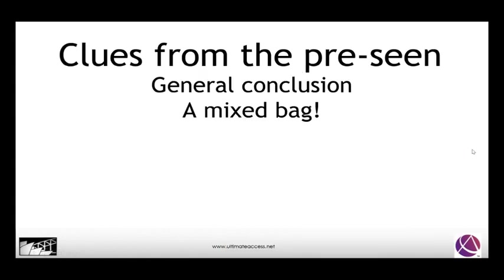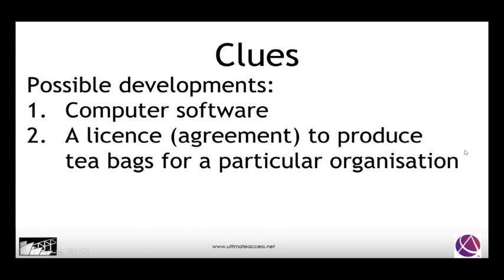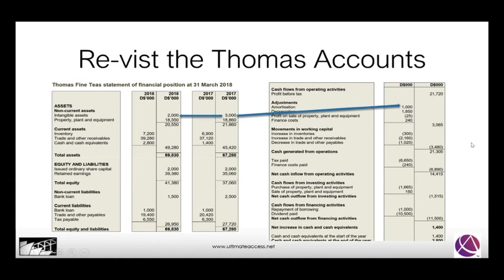So we've had a series of clues from the pre-seen, and the general conclusion is that it's a mixed bag. We could have an intangible assets question, but we've had a good think about these various aspects. There could be other clues — for example, a development of some computer software, which would always be treated as an intangible asset, or a license agreement, perhaps to produce tea bags for a particular organisation such as Forest Supermarkets under an own-label arrangement.